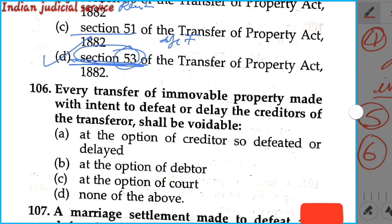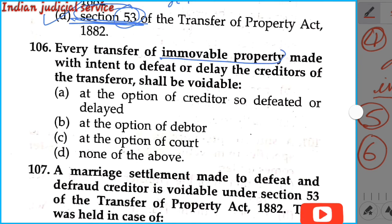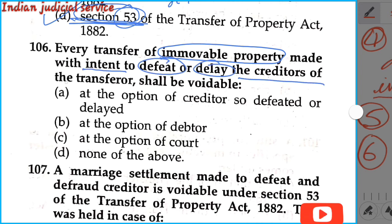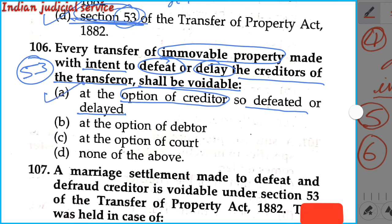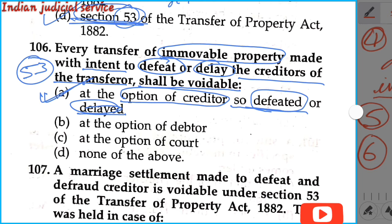Question number 106: Every transfer of immovable property made with intent to defeat or delay the creditors of the transferor shall be voidable at the option of the creditor so defeated or delayed — yes, this is voidable according to section 53 on fraudulent transfer. So our answer is option A.